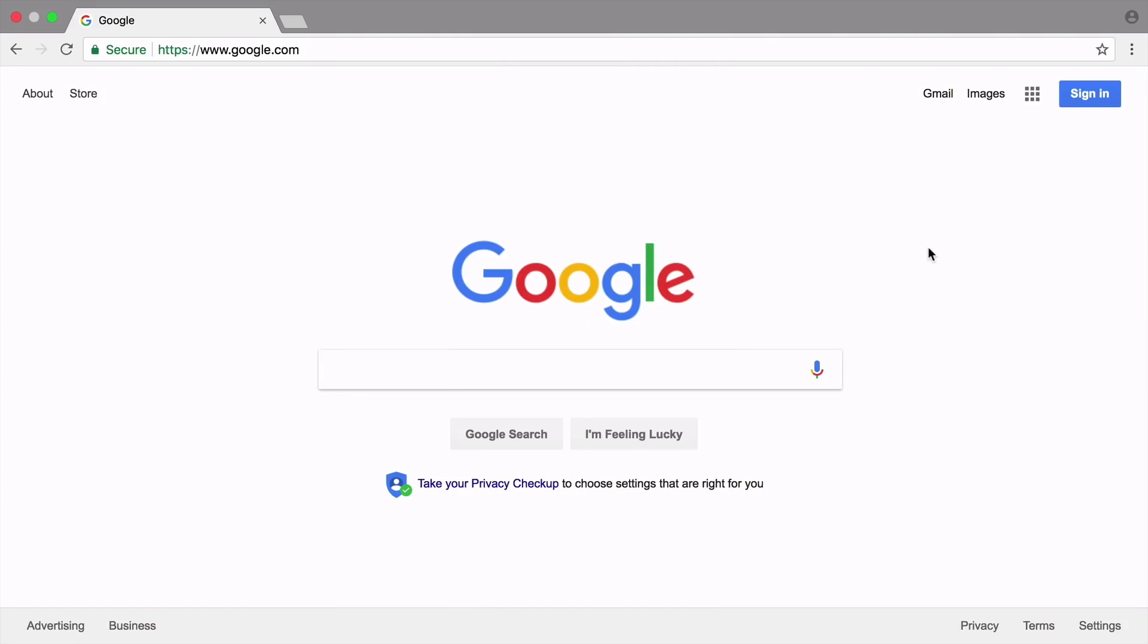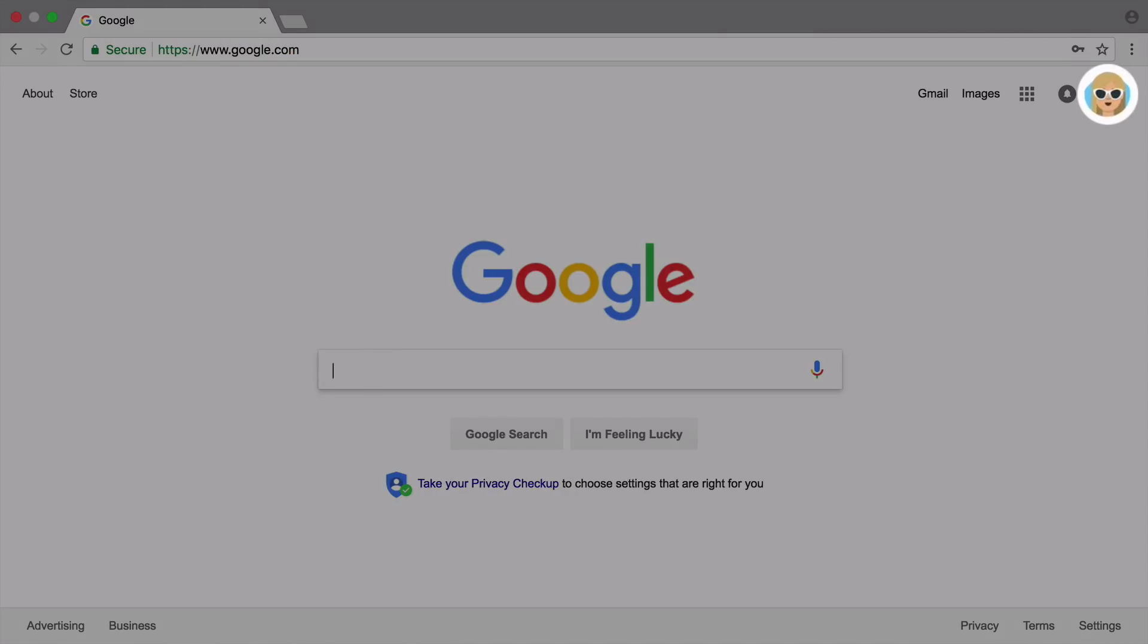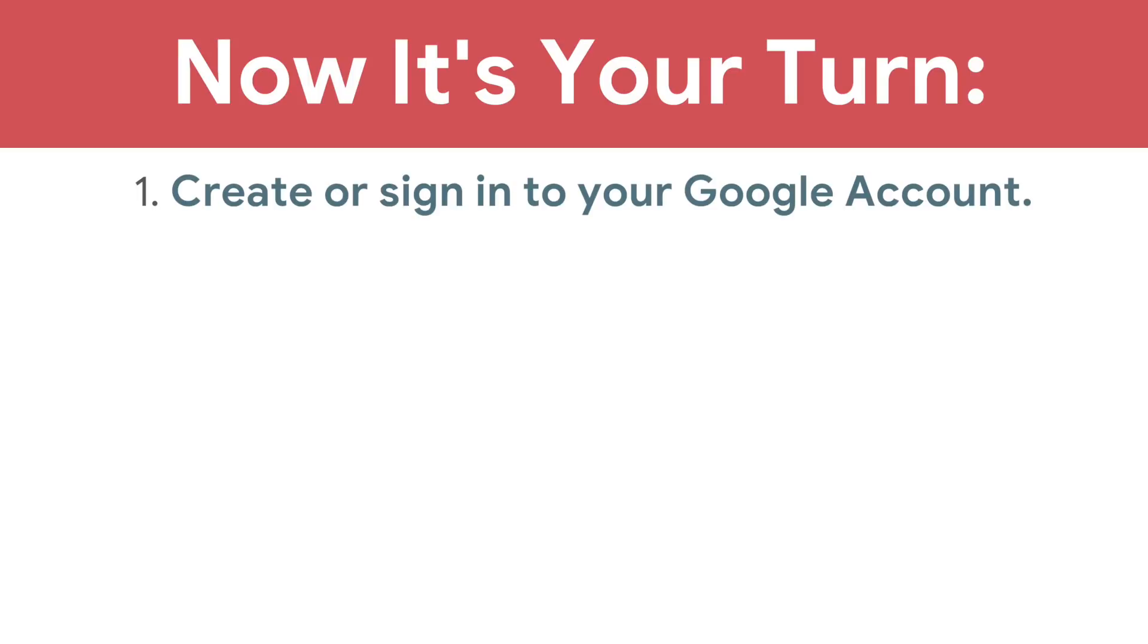To complete these activities, you need a free Google account. If you don't have an account, use the link next to this video to create one. Once you've signed into your Google account with your username and password, click the next arrow to move on to the next activity or choose an activity from the menu. Now it's your turn. If you can create or sign into your Google account, move on to the next activity.